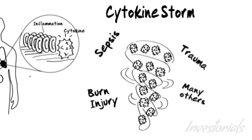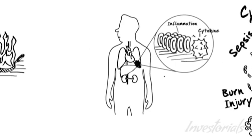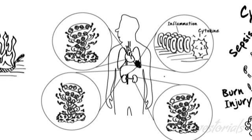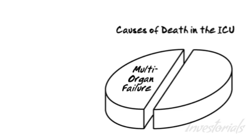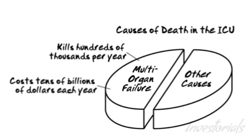Cytokine storm leads to toxic, uncontrolled inflammation, which can cause vital organs such as the heart, lungs, kidney, and liver to fail. Failure of multiple organs like these are the leading cause of death in roughly half of all patients admitted to the ICU, killing hundreds of thousands of people and costing tens of billions of dollars each year in the US alone.